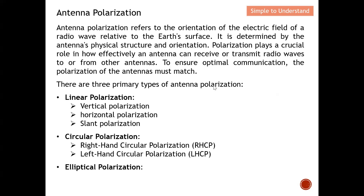There are three primary types of antenna polarization: linear polarization, circular polarization, and elliptical polarization. Under linear we have mainly three types — vertical, horizontal, and slant polarization. Under circular polarization we have two types: right-hand circular polarization, which is clockwise, and left-hand circular polarization, which is anticlockwise. Last but not least, elliptical polarization. So in short there are three main types, each with subsets.